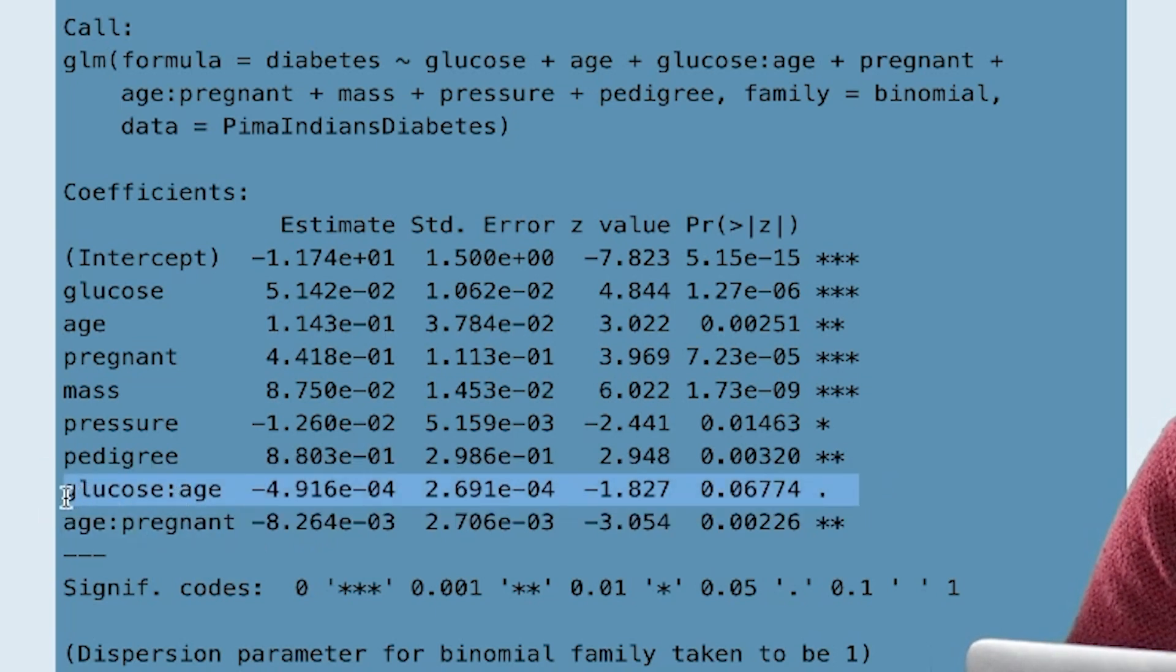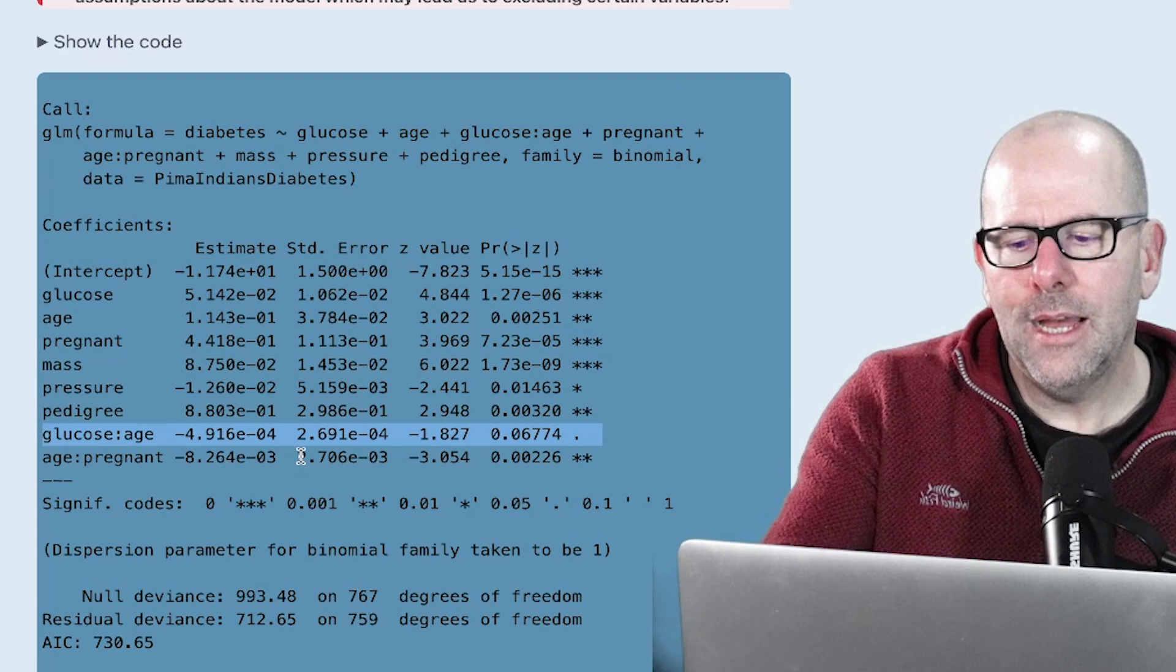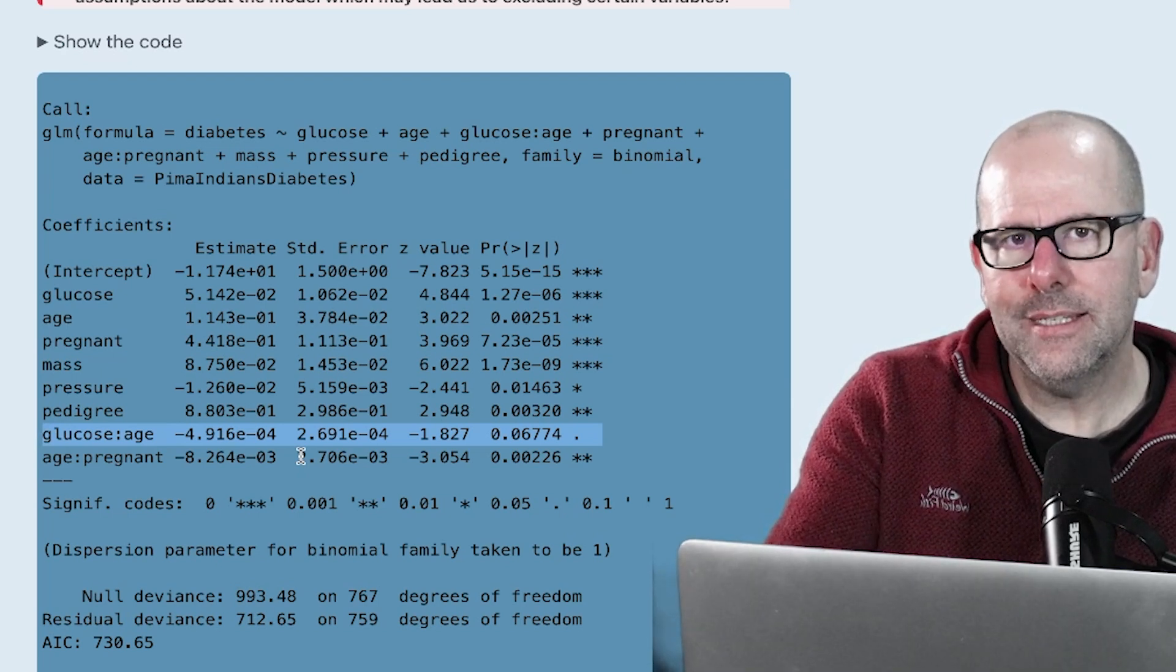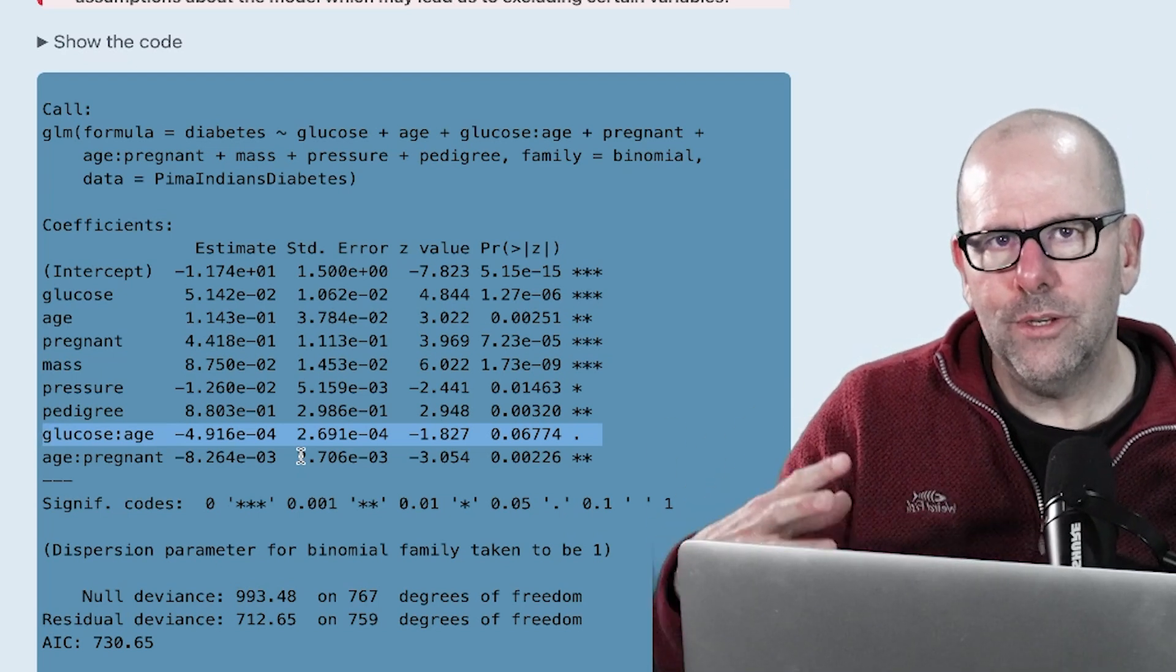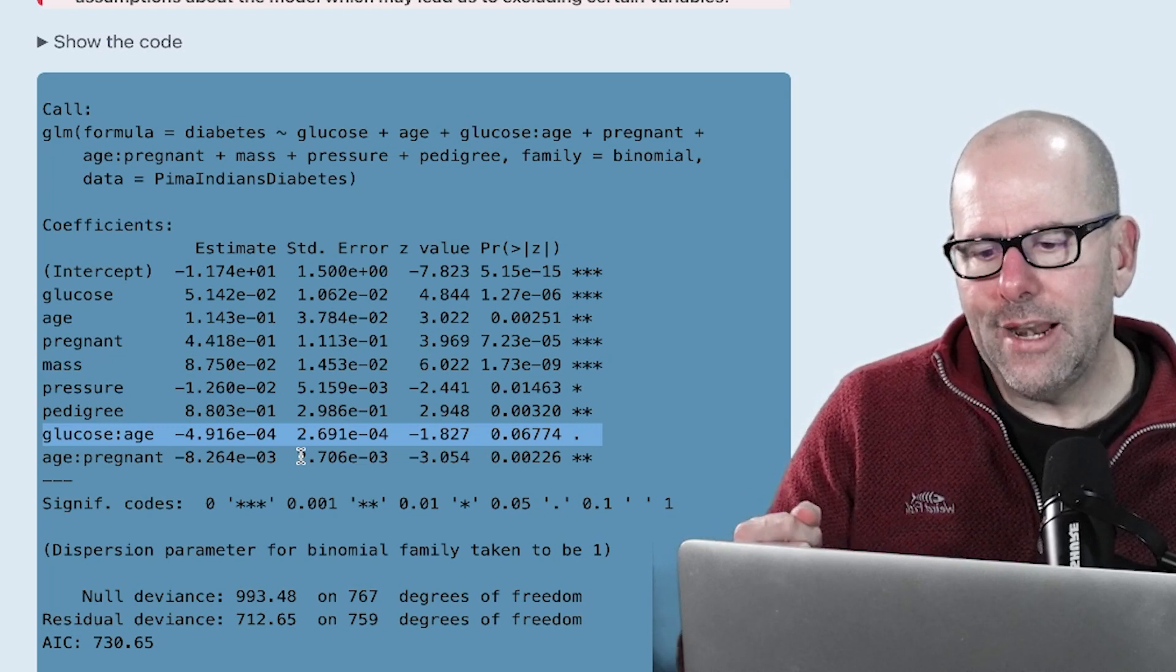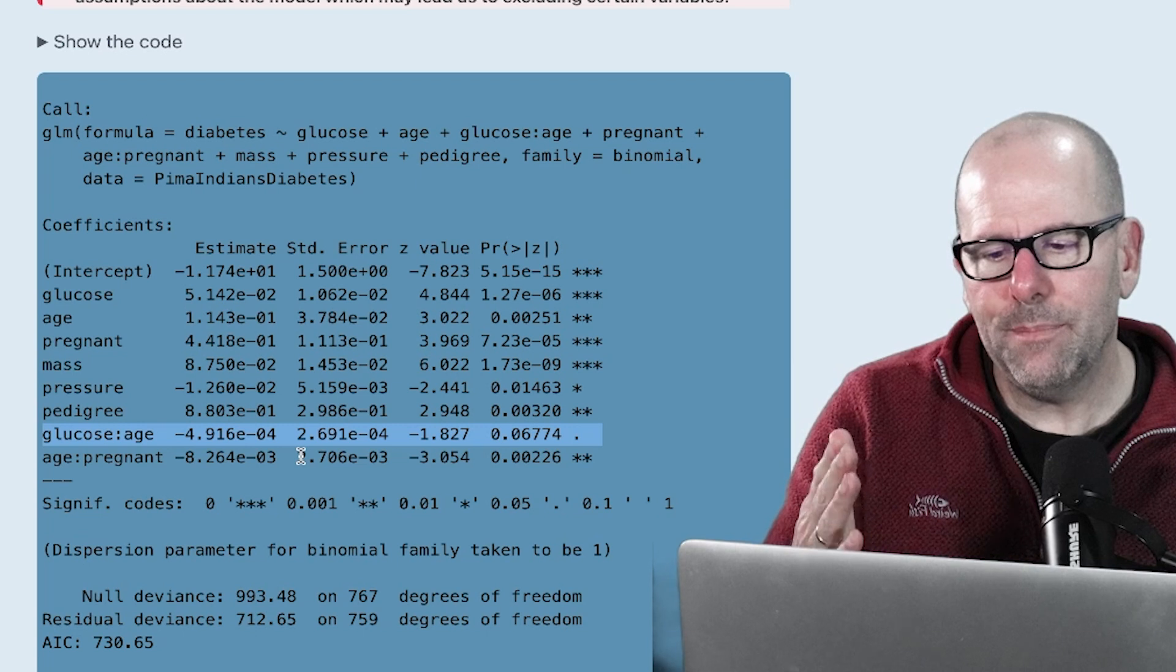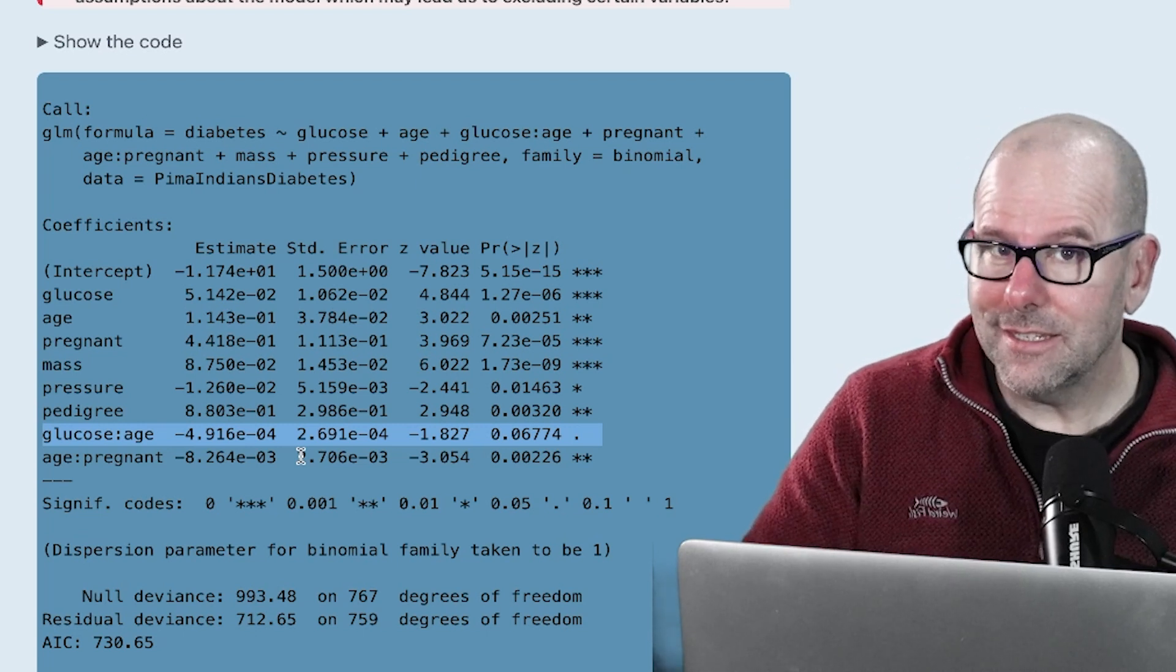Now, interestingly, I've got a small error here in that glucose and age in the final model were not statistically significant. So they should arguably, that interaction term should come out, even though in a more simple version of this model, that interaction term was statistically significant. Once we've included the full package of variables, actually, the impact of that seems to have been explained away by other factors. Interesting, isn't it?